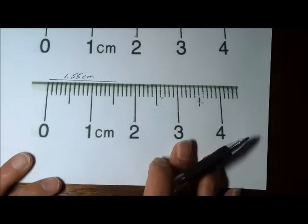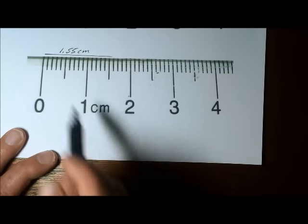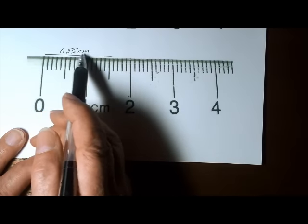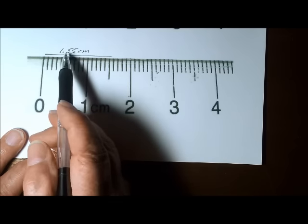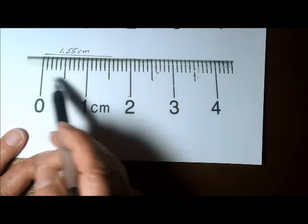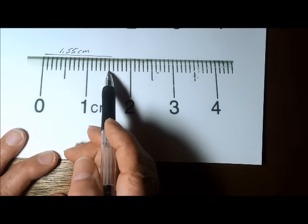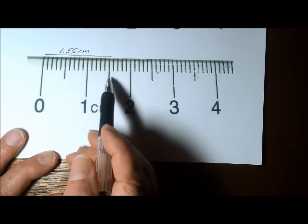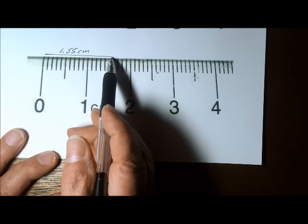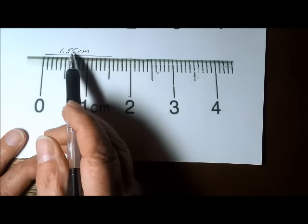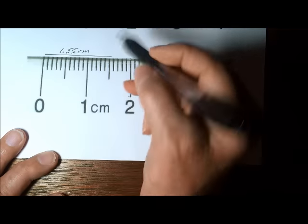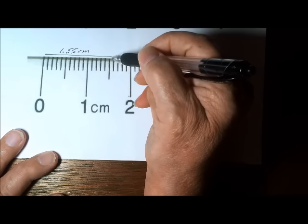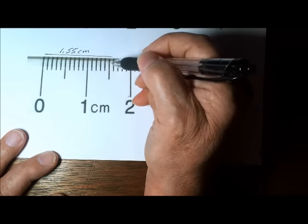So this measurement is 1.55 centimeters. That's 1 whole centimeter, 0.5 centimeters, which is 5 millimeters. And then you can estimate the next digit, which has to be a 5 or a 0. In this case, it's a 5 because it looks to be halfway between these two marks.